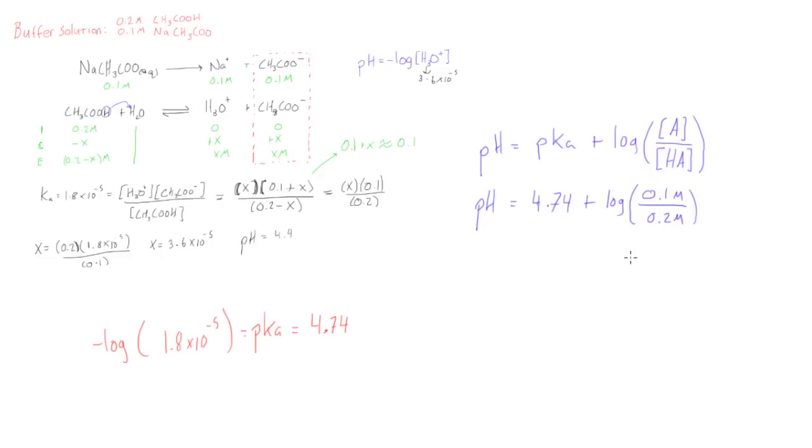So now let's just go and punch this in our calculator. We'll keep going actually. pH is equal to 4.74 and the log of 0.1 over 0.2 plus 4.74. Actually no, let's just do this all in one go.